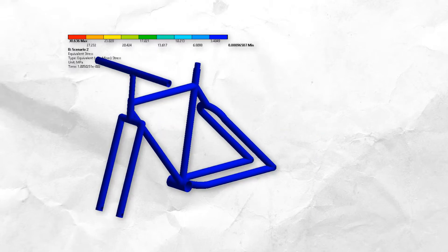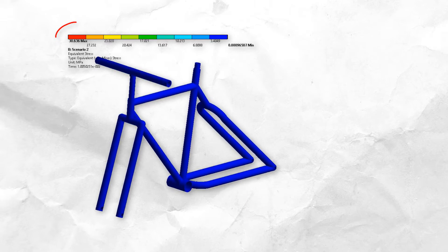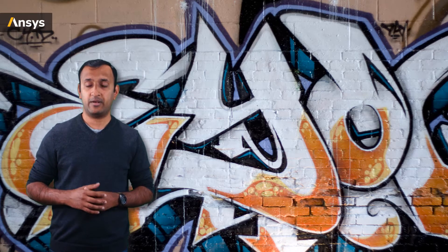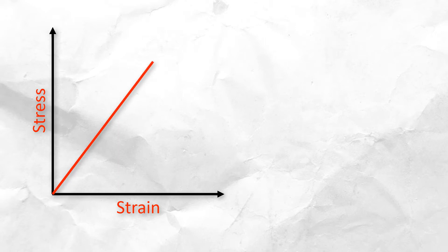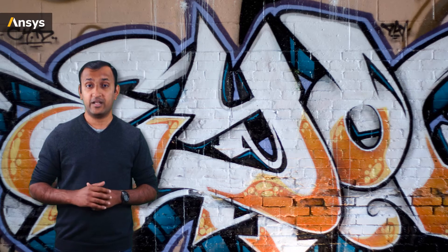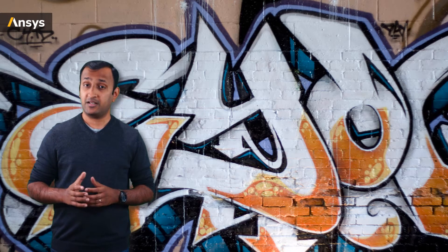Here's the stress contour for this model using a static analysis. We can see the way the stresses are distributed in the model. From the legend, we see that the maximum stress developed in the bike frame is about 30.6 MPa. The purpose of this simulation is to see how the stresses are distributed in the bike frame and if it can take this load without undergoing plastic deformation. The structural steel material is known to yield at a stress around 275 MPa, which is way more than the maximum stresses developed in this frame. So we may conclude that the current design of the bike frame passes this design criteria.